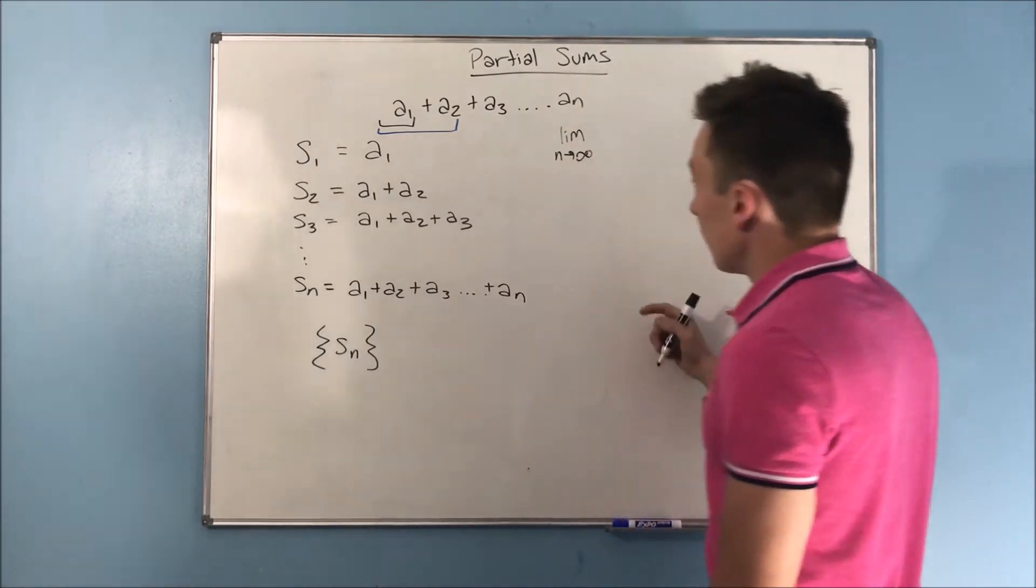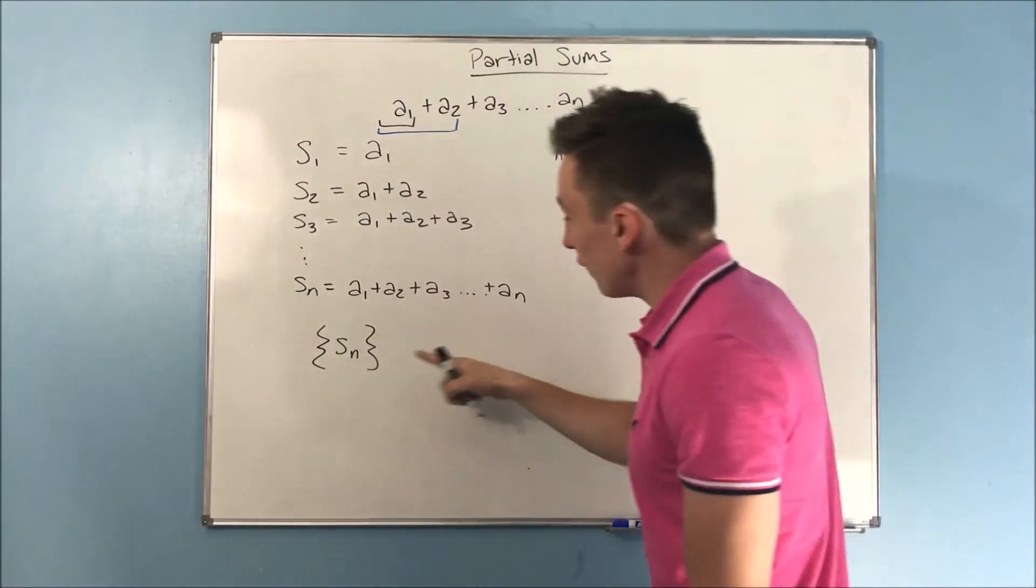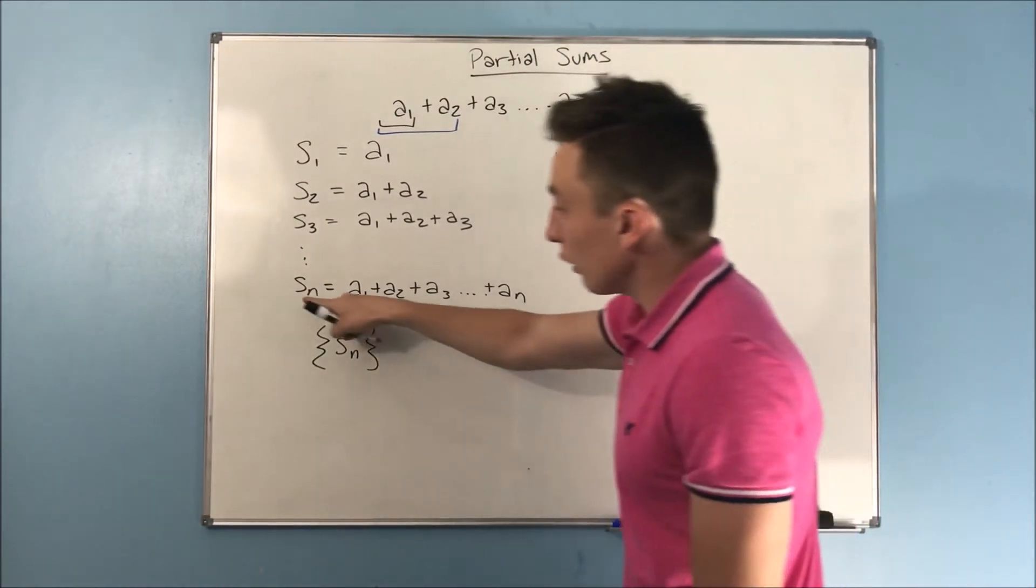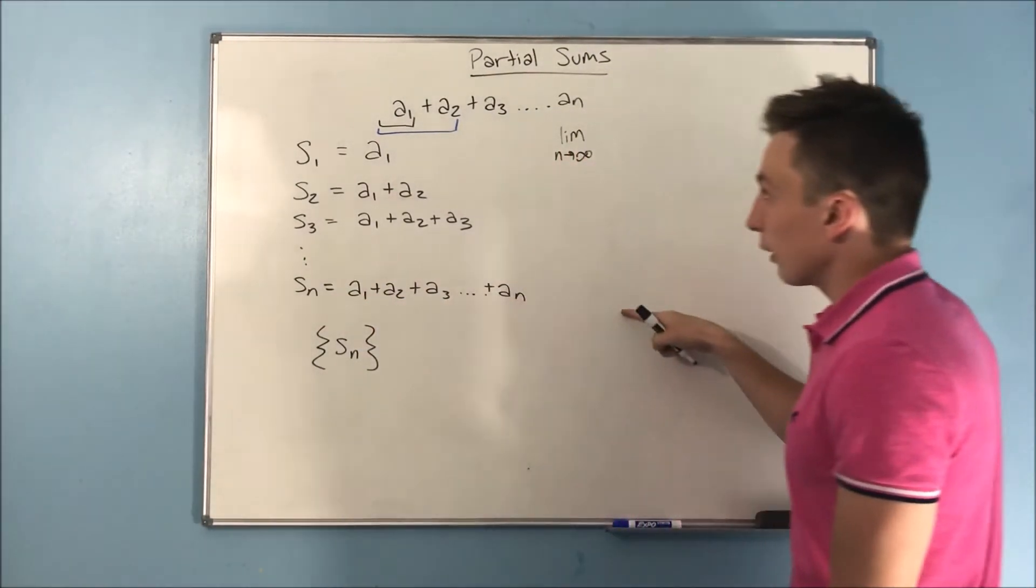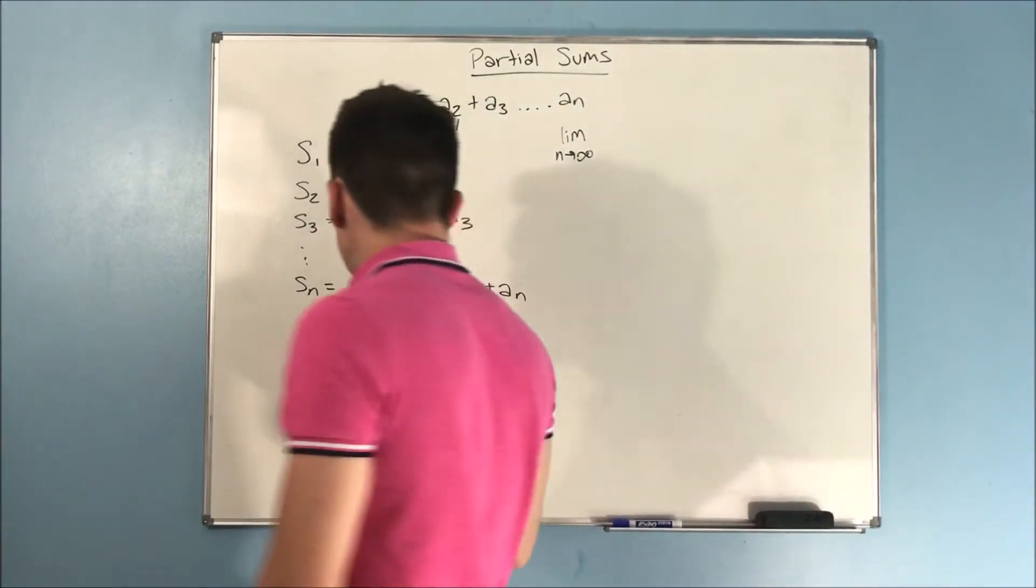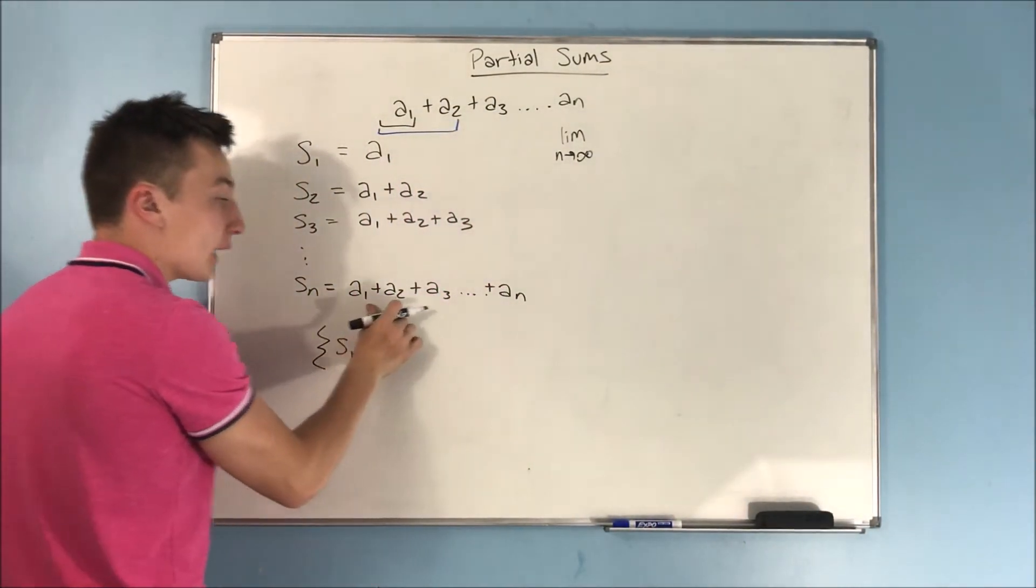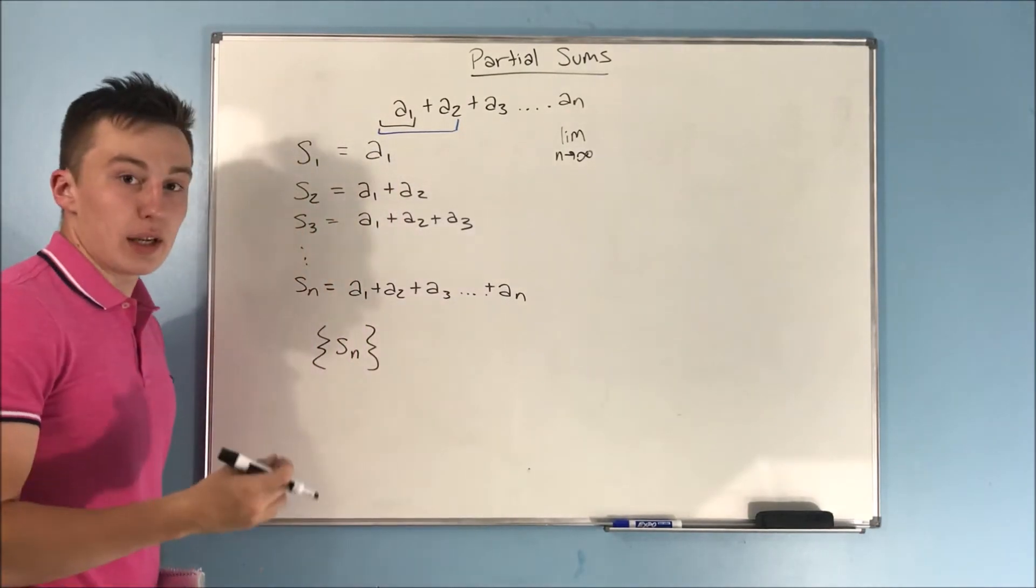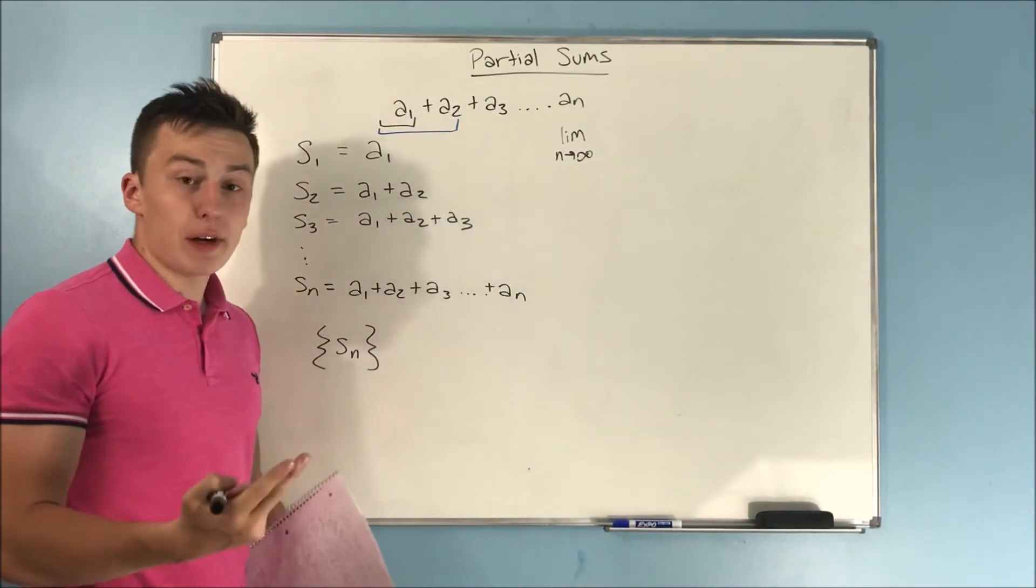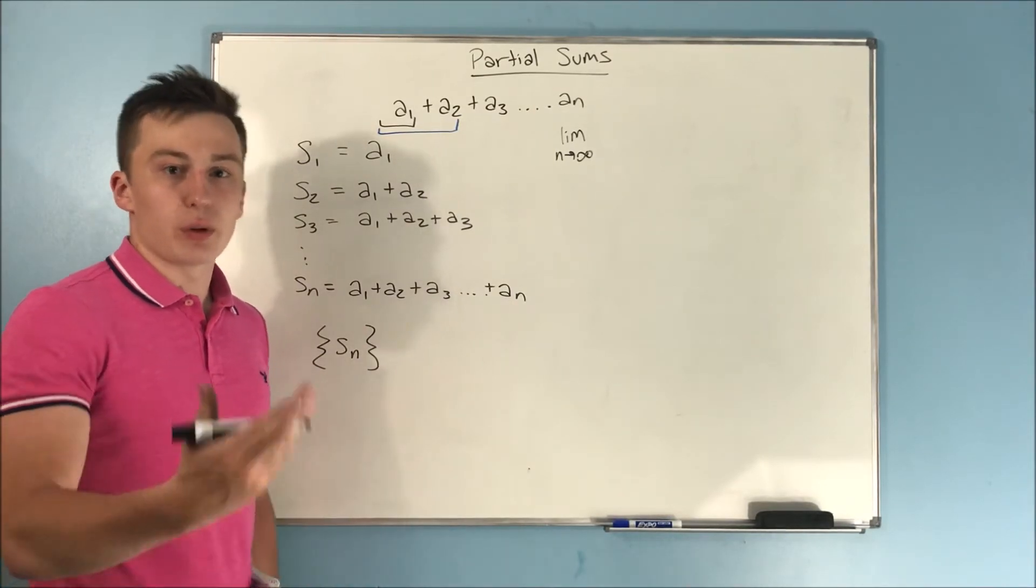Because as n approaches infinity, you get an infinite number of terms. So we're literally finding the sum of an infinite number of terms, which is exactly what we want to do to prove if something is convergent or divergent. We want to take that sum of an infinite number of terms, and then see, is that an infinite answer, or is that a finite answer? Is it convergent or divergent, right?